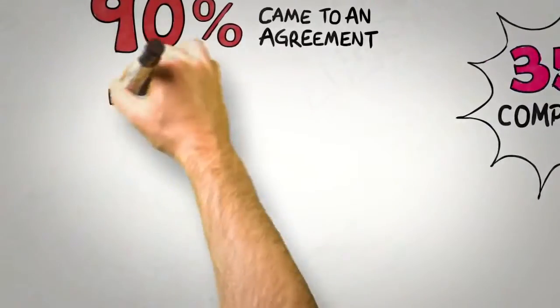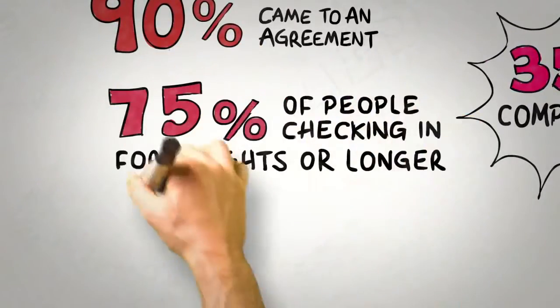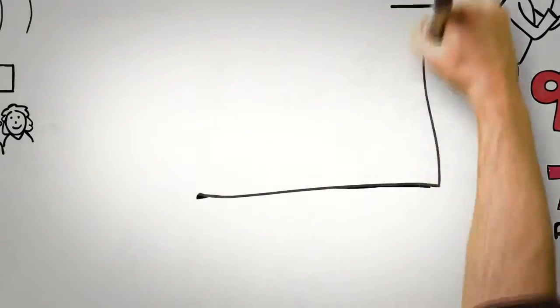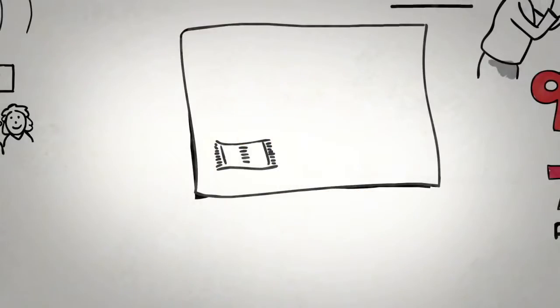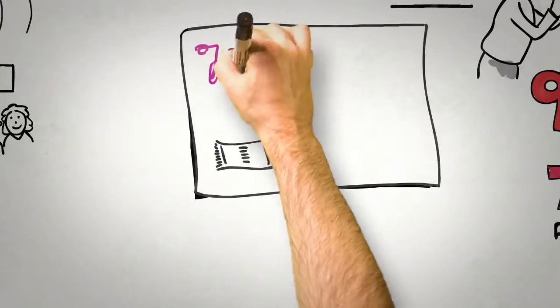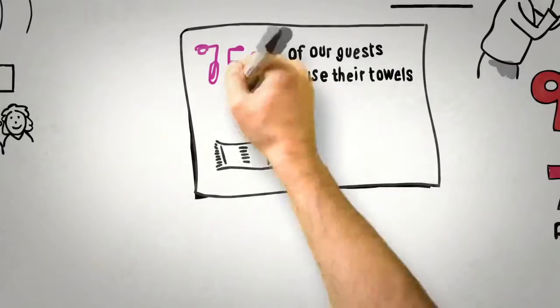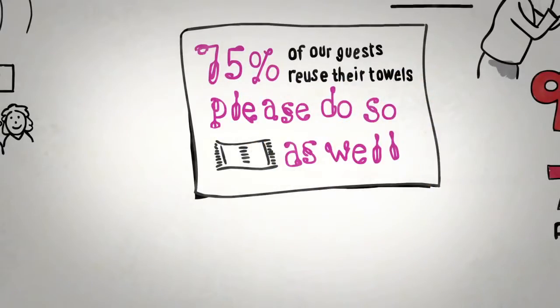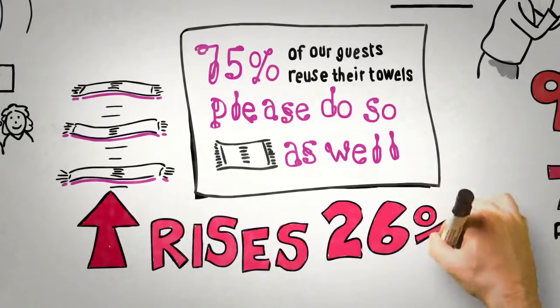Well, it turns out that about 75% of people who check into a hotel for four nights or longer will reuse their towels at some point during their stay. So what would happen if we took a lesson from the principle of consensus and simply included that information on the cards and said that 75% of our guests reuse their towels at some time during their stay, so please do so as well? Well, it turns out that when we do this, towel reuse rises by 26%.